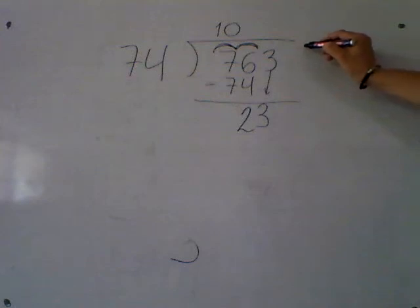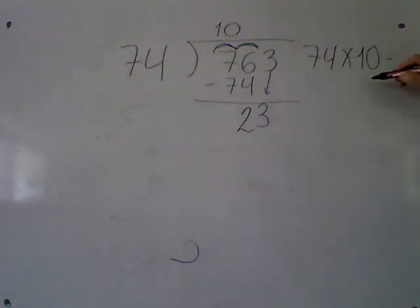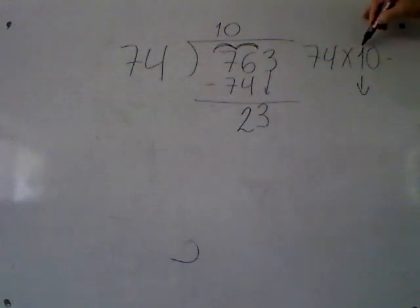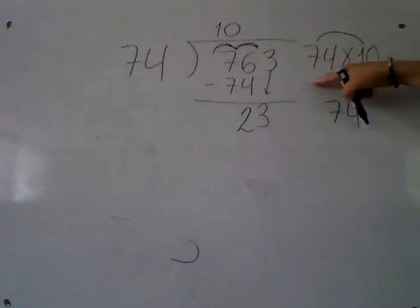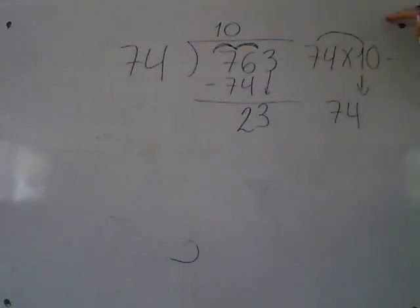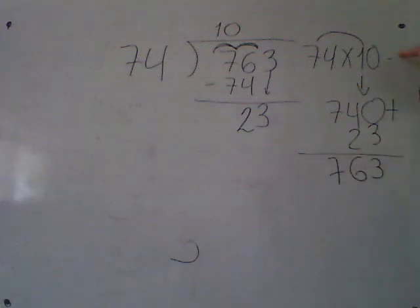Now let's check it. 74 — the divisor — times the quotient, which is 10. 74 times 1 is 74. How many zeros in 74? None. How many zeros in 10? One zero. One zero in total — that's the zero we place here. Plus the remainder of 23: 3, 6, 7. My answer is my dividend, so the division is correct.